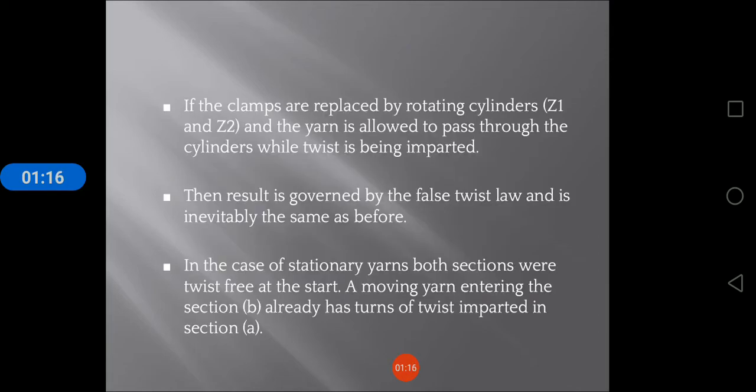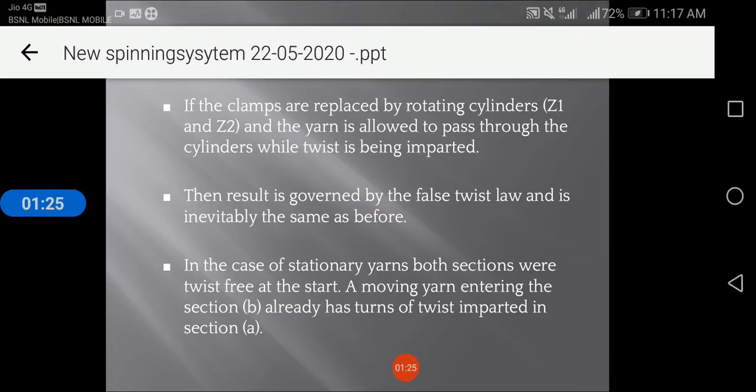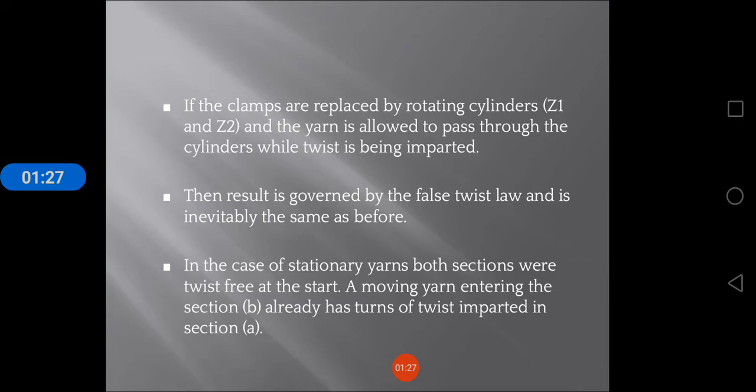In case 2, if the clamps are replaced by rotating cylinders Z1 and Z2 and the yarn is allowed to pass through the cylinders while twist is being imparted, then the result is governed by the false twist law and is inevitably the same as before.